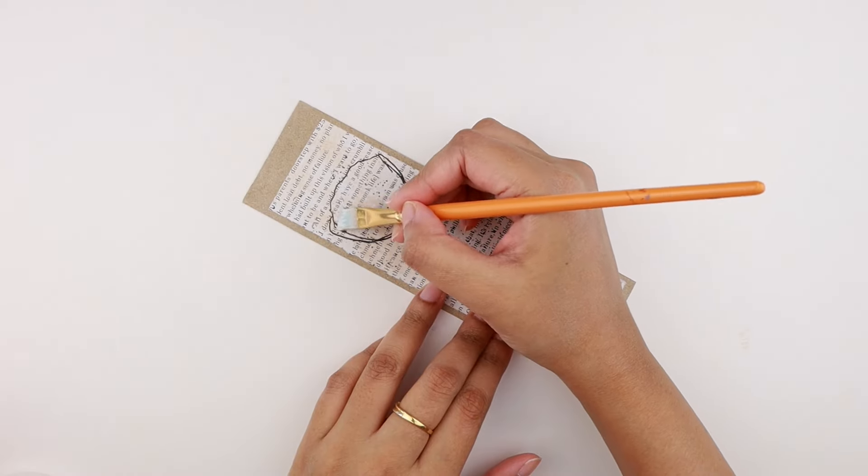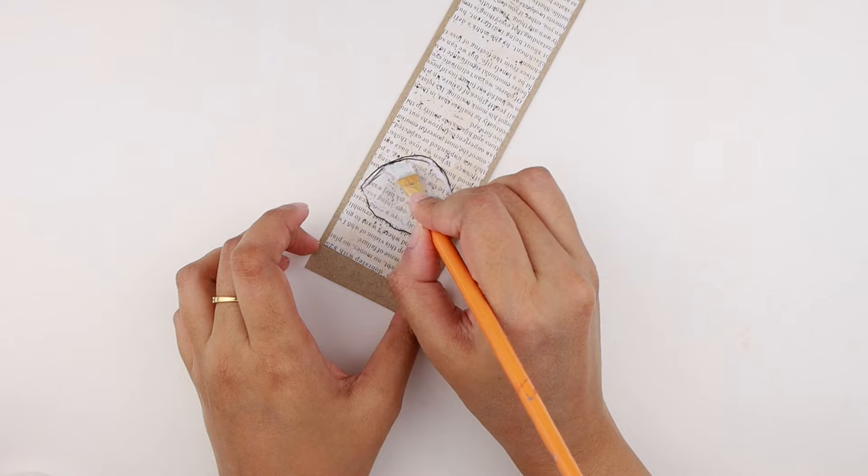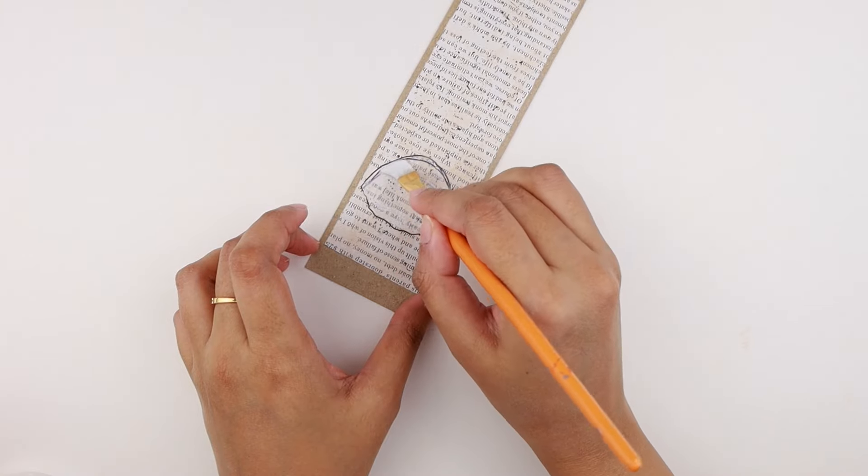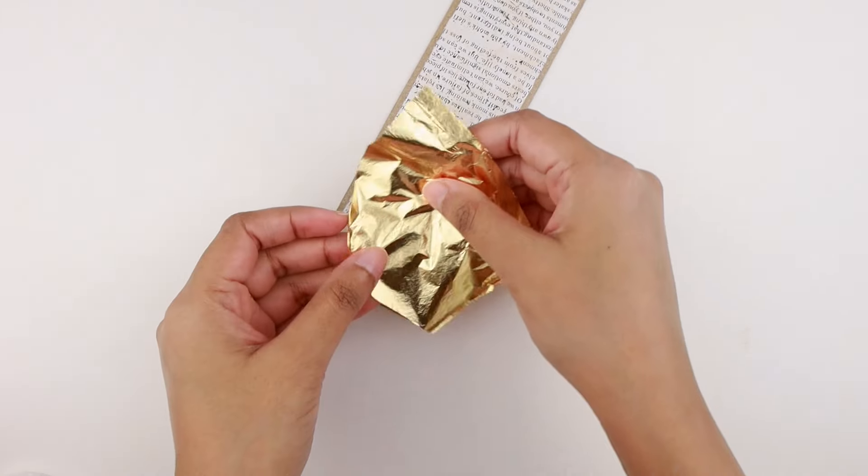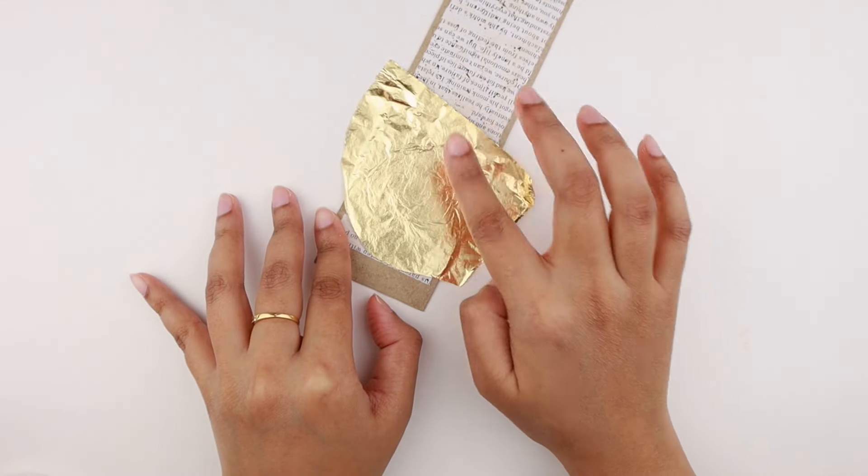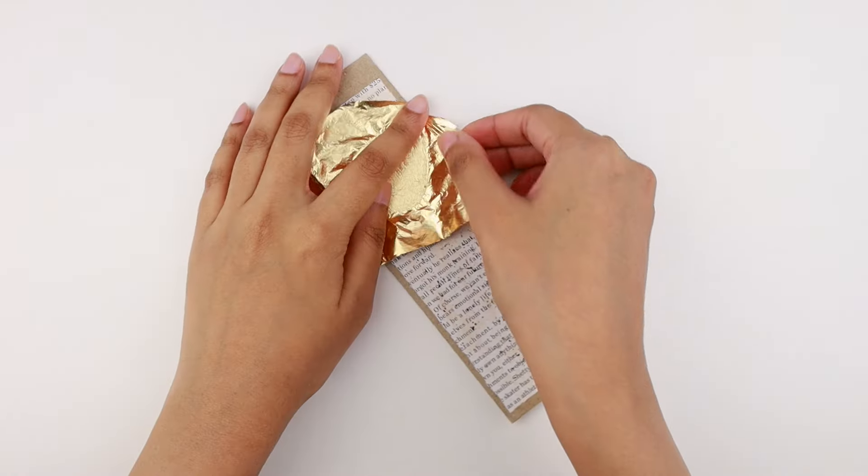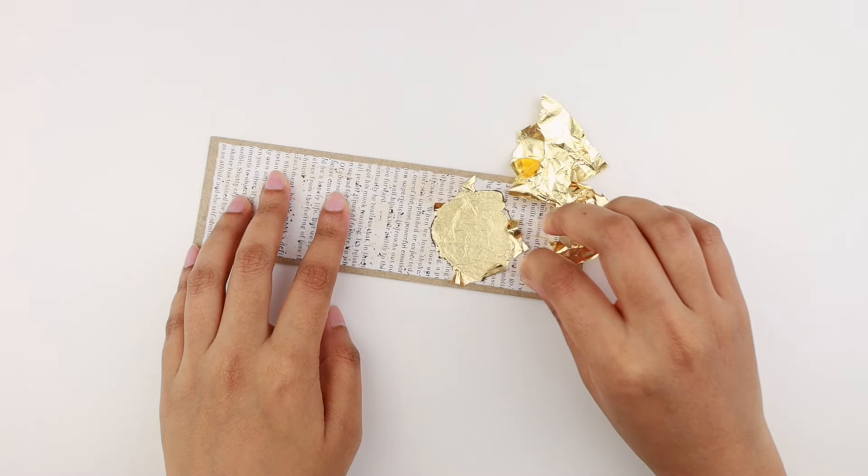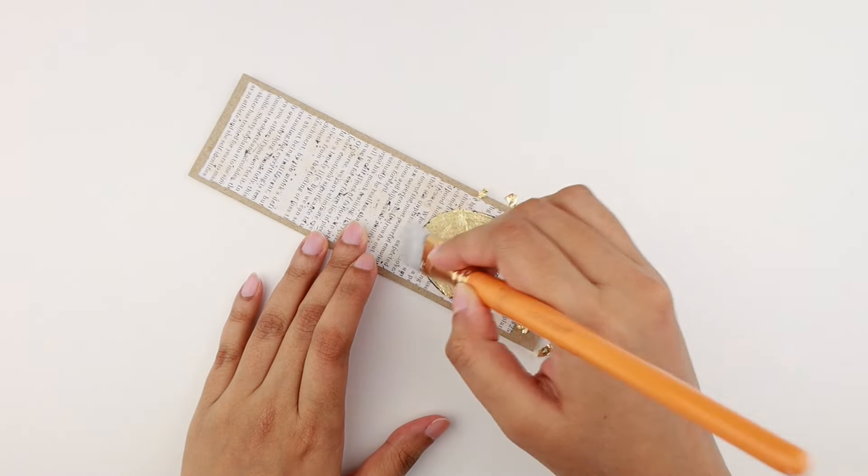Then we're going to fill in the shape with Mod Podge making sure the glue stays within the outline. I'm taking some gold leaf and pressing it onto the area where we applied Mod Podge. The Mod Podge is now dry and we're going to remove the extra gold leaf. Then I'm using a brush to clean it up.